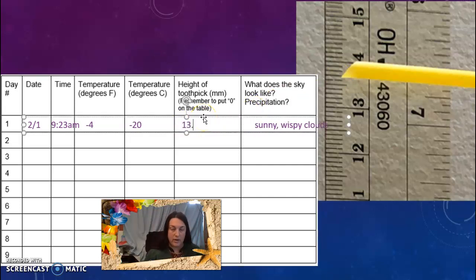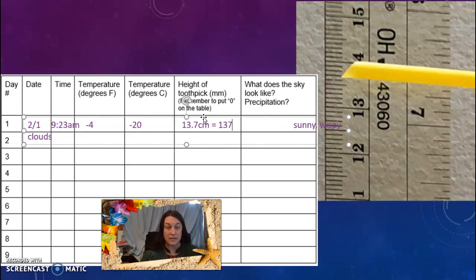So on my table, I'm going to go ahead and write 13.7 centimeters. Now to change it to millimeters, all I do is multiply by 10 or move the decimal one place to the right. So it's going to be 137 millimeters. So that's what I'm going to write down for my measurements.